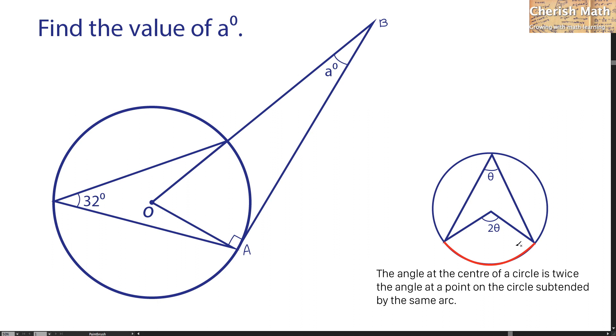Next I'm going to use this theorem located on my right hand side here to solve the problem. It reads as the angle at the center of a circle is twice the angle at a point on the circle subtended by the same arc.